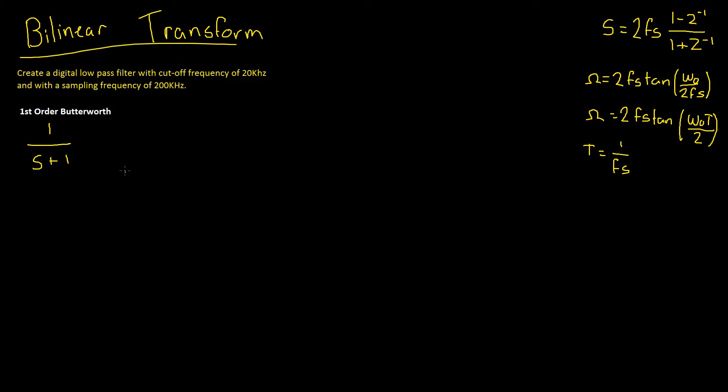Okay, so let's delve into the question. We're given a question to create a digital low-pass filter with a cut-off frequency of 20kHz and with a sampling frequency of 200kHz. So before we continue, let's quickly rewrite this cut-off frequency in terms of radians per second. Remember, there's 2 pi radians for every revolution, therefore we need to have 20kHz times by 2 pi.